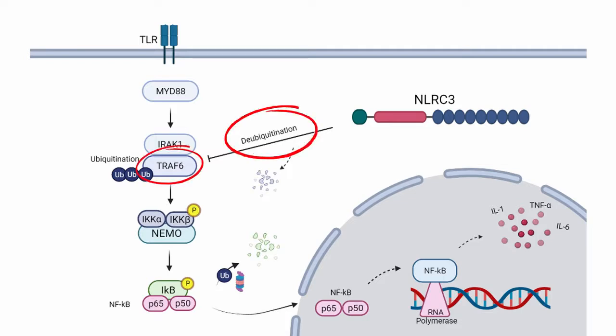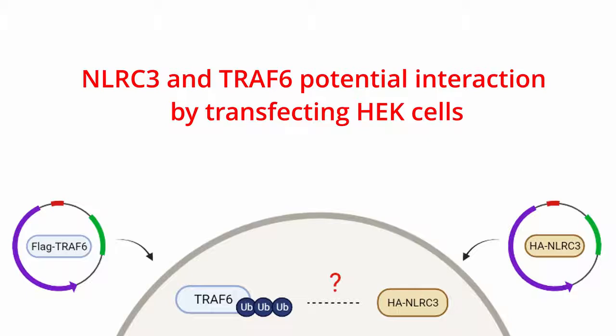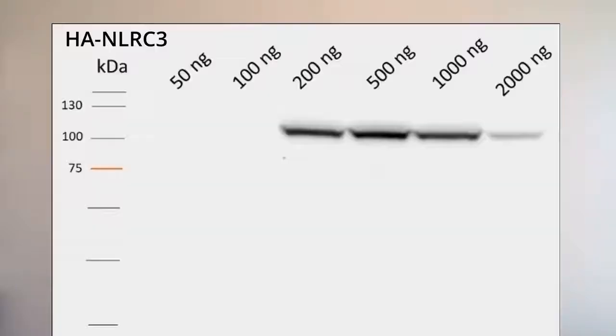Here, I investigated the anemone NLRC3 and TRAF6 potential interaction by transfecting HEK cells with four different plasmids. Among the expression plasmids, HA-NLRC3 gave the best Western blot results, with 500 ng being the best concentration for transfection efficiency, as shown by the band intensity.